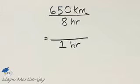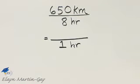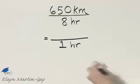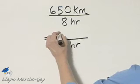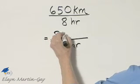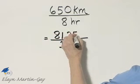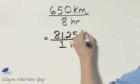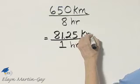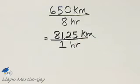I'll let you do this off to the side — you need to divide 8 into 650. And if you divide 8 into 650, you'll have 81 and 25 hundredths kilometers.